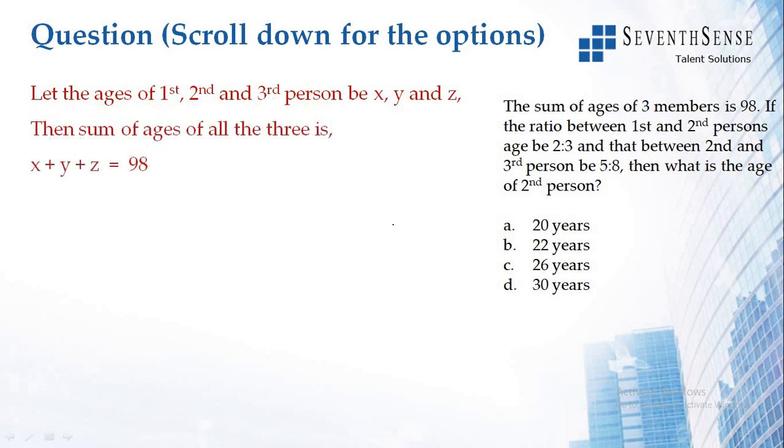The ratio between first and second person is x to y equals 2 by 3, and the second and third person's ratio is y to z equals 5 to 8.